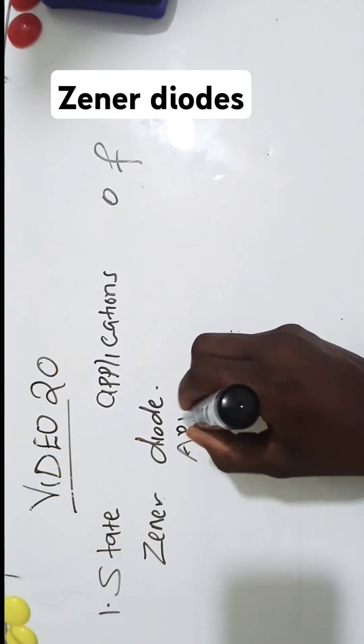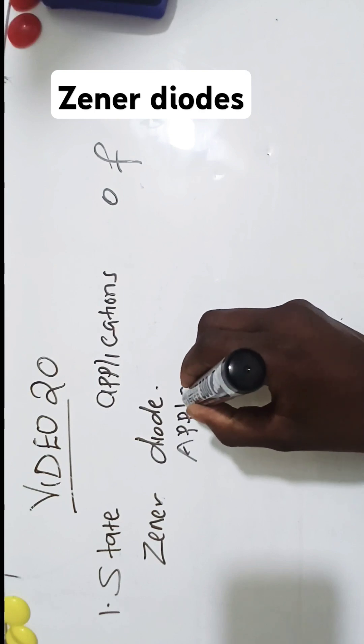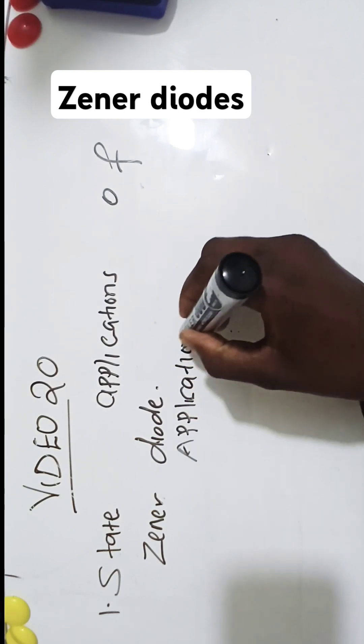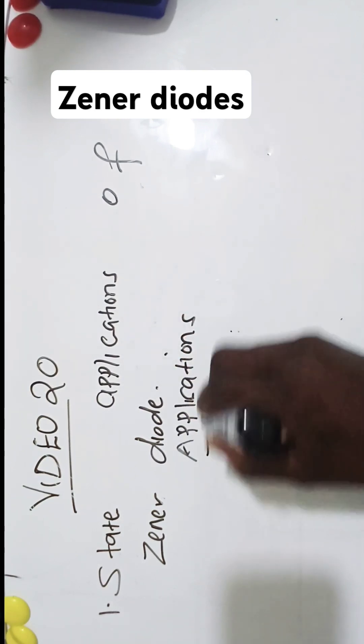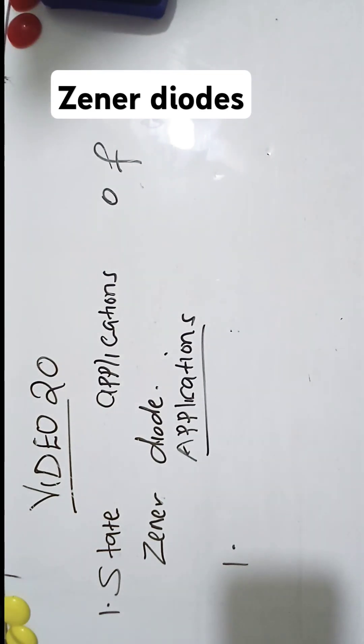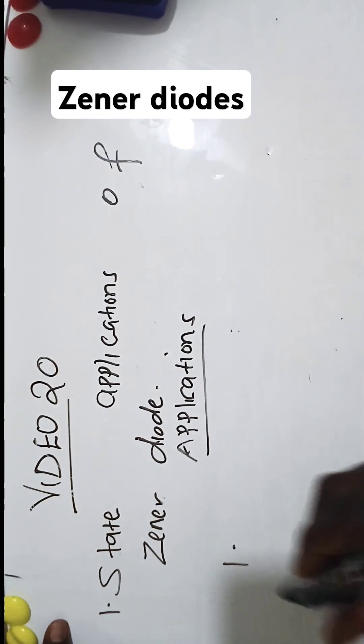Applications. Application number one: a Zener diode would be applied as a voltage regulator.